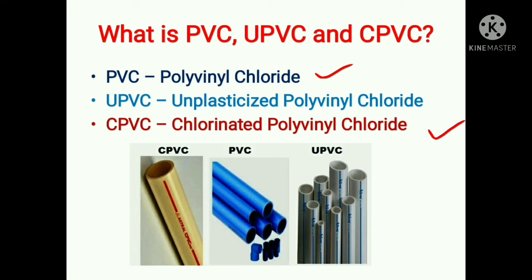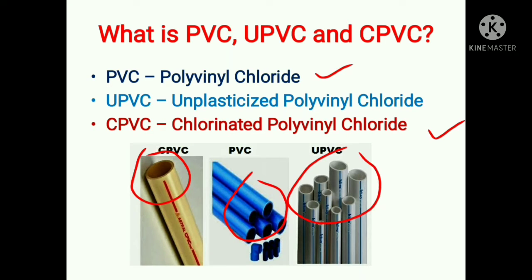From the picture you can see that CPVC pipes are yellowish in color — a light yellow color. PVC pipes are mostly gray in color, but nowadays they are coming in various colors like orange, green, and red as well, though gray is most common. UPVC pipes come in white color, as you can see in the image.